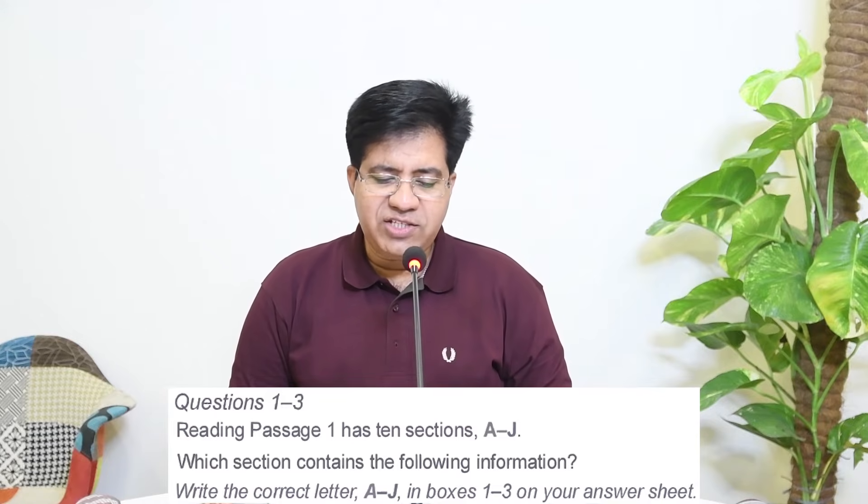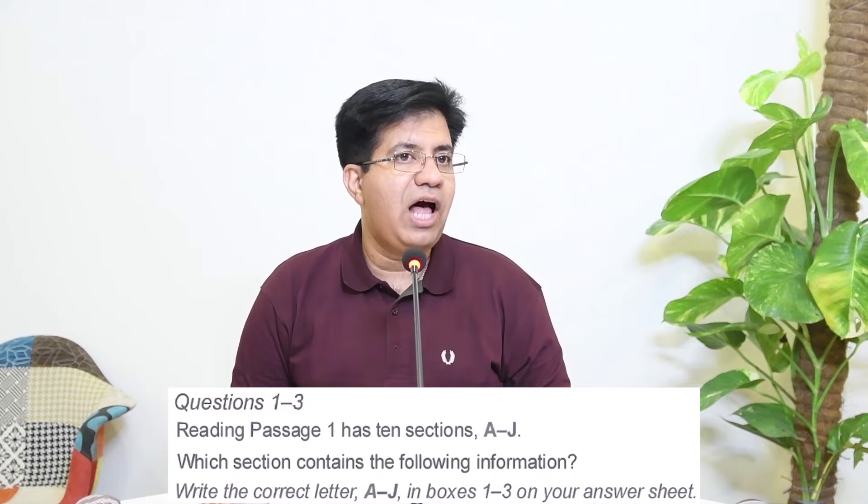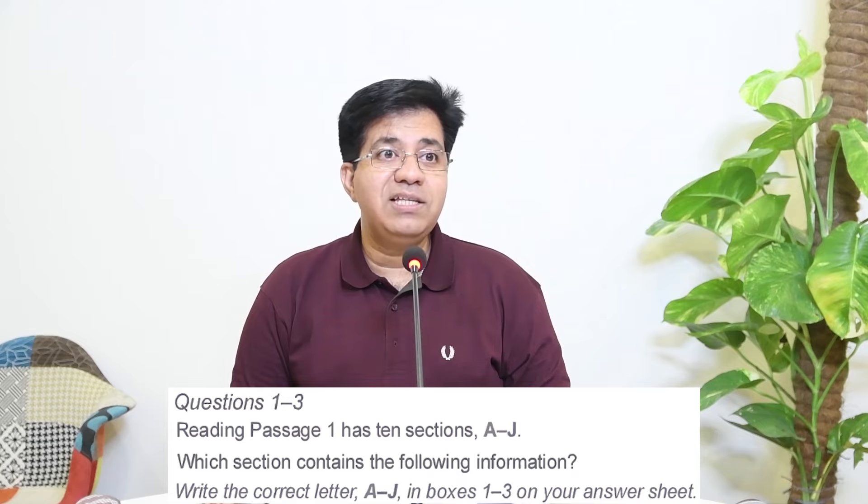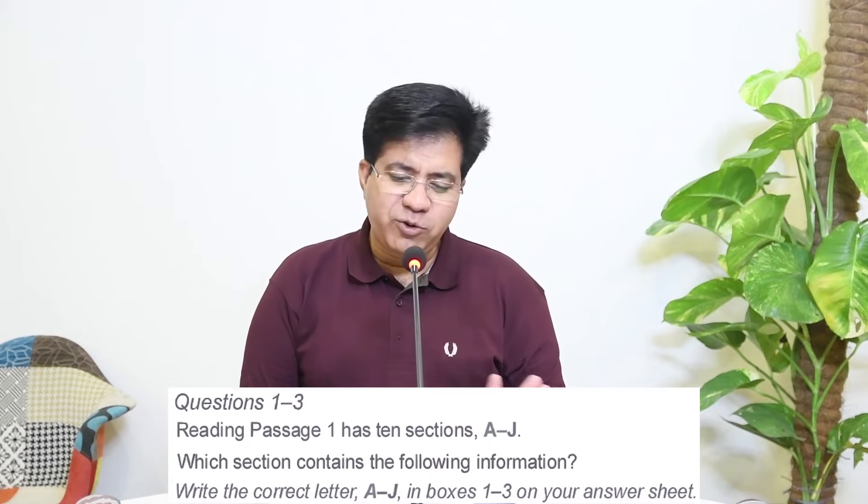Questions 1-3 ask which section contains the following information — sections A to J means nine or ten paragraphs. If you start with this question type, it's a plan for disaster because these three questions need your attention across the whole passage and will take around eight to nine minutes. Ignore them for now. They are Type B, where questions and answers are not in order.